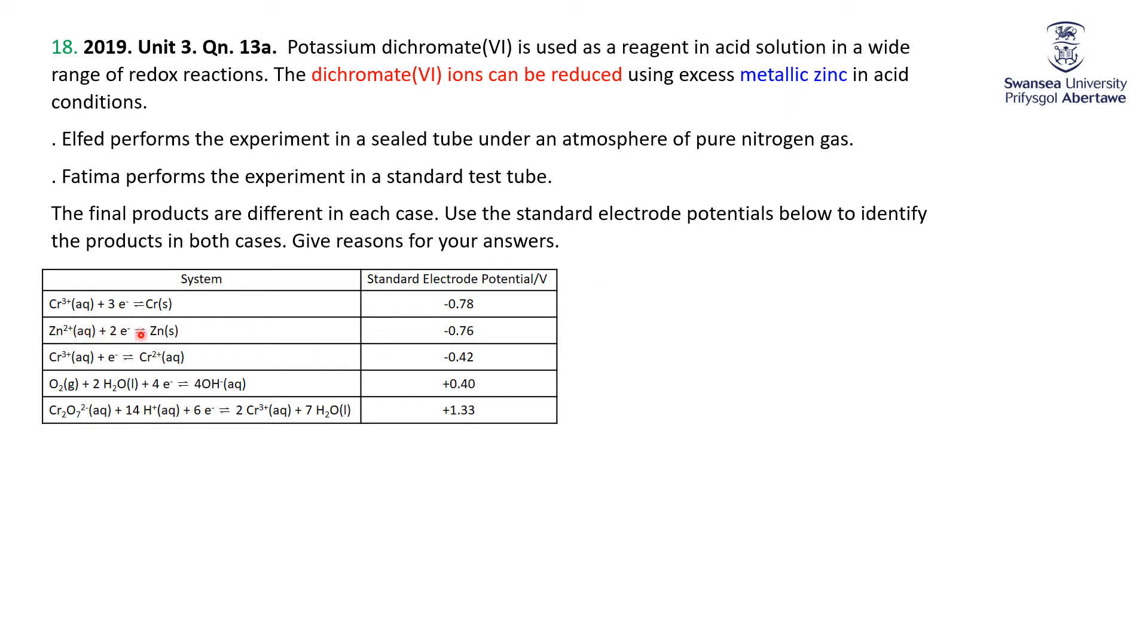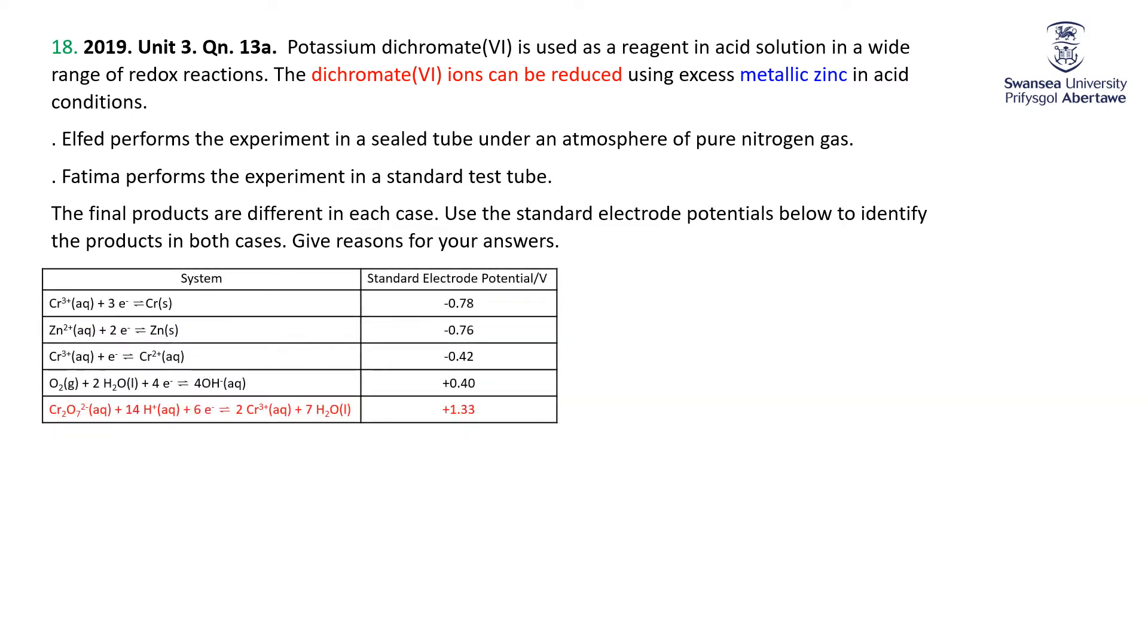Here's a reduction half equation involving zinc. So the first two equations we're going to be interested in: there's the reduction one and there's the oxidation one, taking our reduction half equation and flipping it around. So dichromate there being reduced, metallic zinc obviously having to be oxidized.